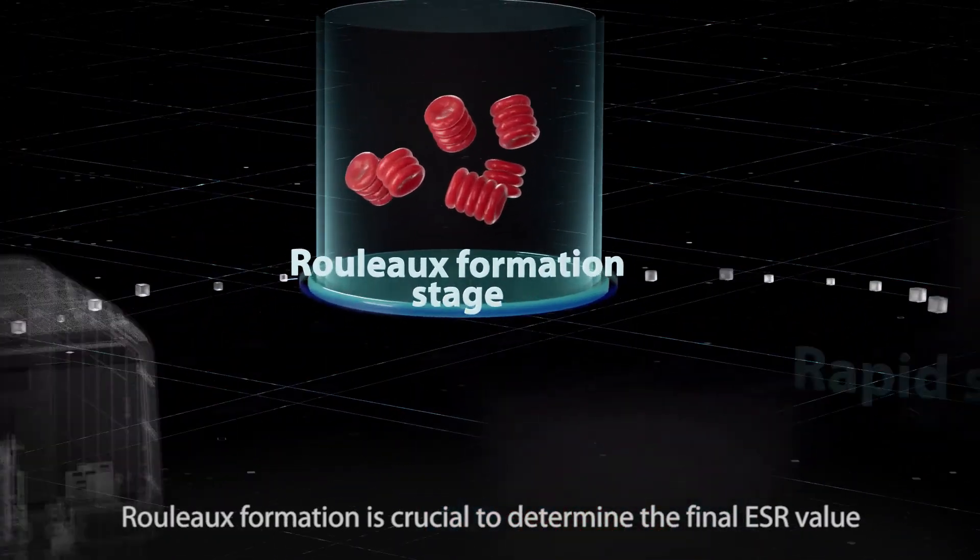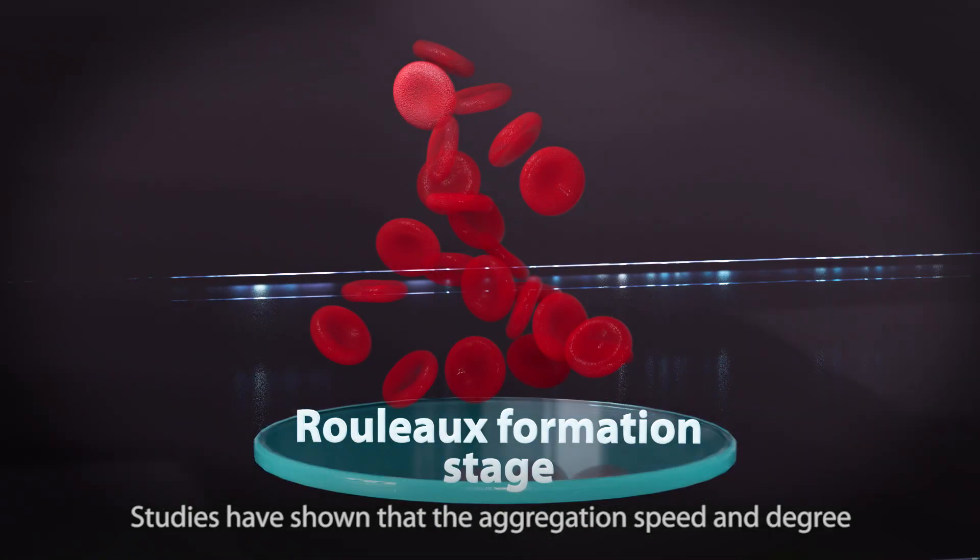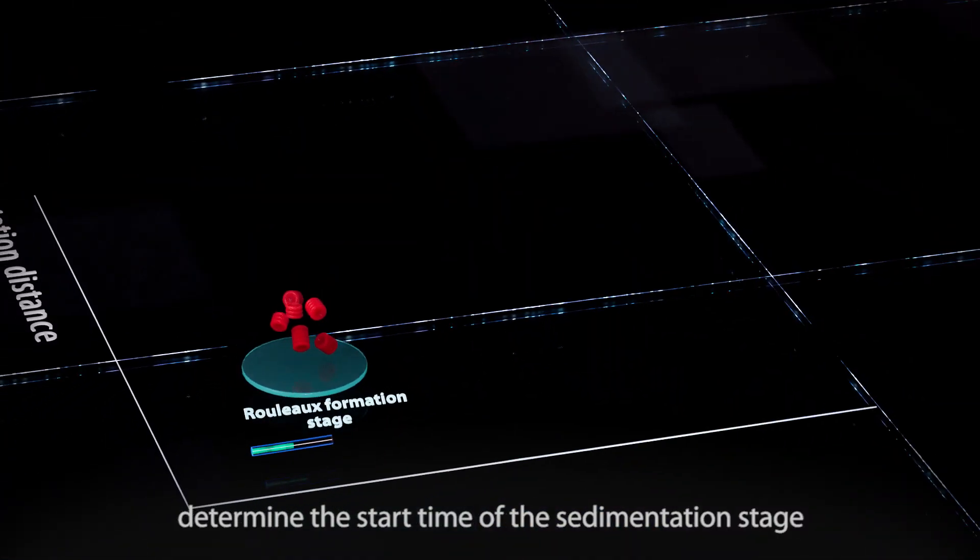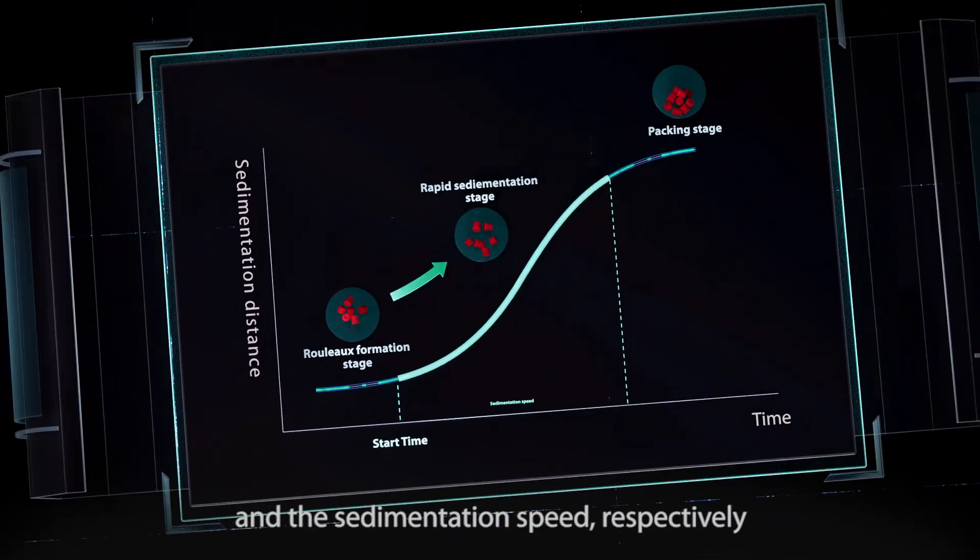Rolo formation is crucial to determine the final ESR value. Studies have shown that the aggregation speed and degree in the Rolo formation stage determine the start time of the sedimentation stage and the sedimentation speed, respectively.